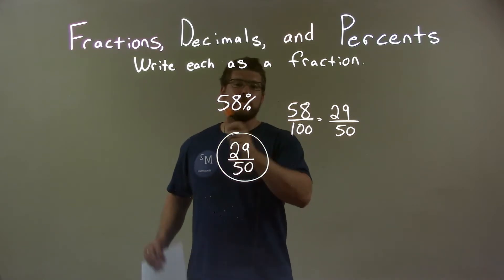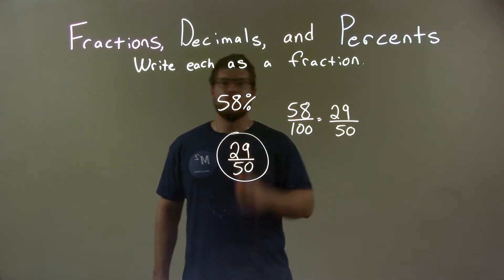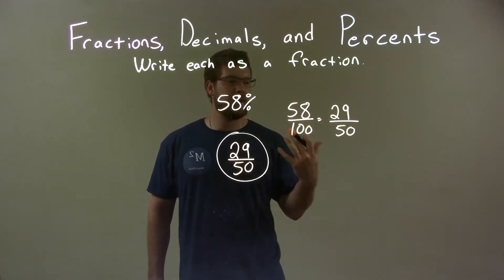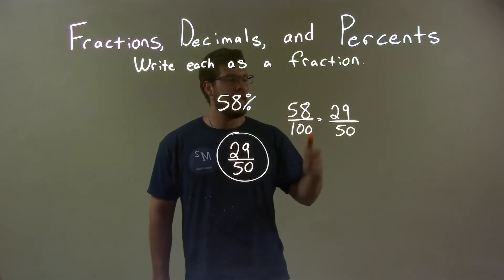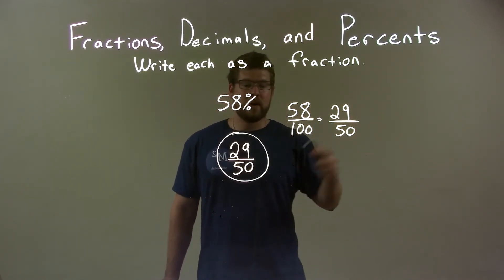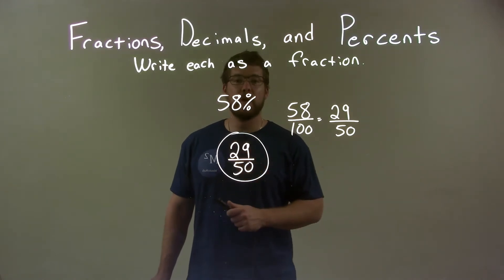So quick recap. We're given 58% and we have to write this as a fraction. We can write 58% as 58 over 100. We can simplify that and just divide in the numerator and the denominator by 2. That gives us 29 over 50. Nothing else we can do to simplify, so our final answer is just 29 over 50.